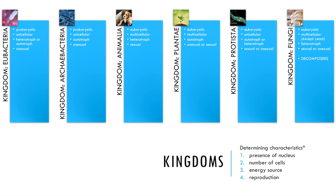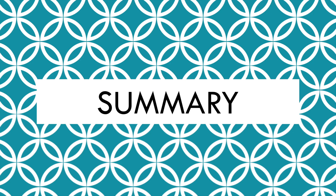Here are our six kingdoms — one in the domain bacteria, one in the domain archaea, and four in the domain eukarya. This infographic shows the different characteristics of organisms in each of the six kingdoms. This would be a good place to pause your video and review some of the characteristics that go in each kingdom.